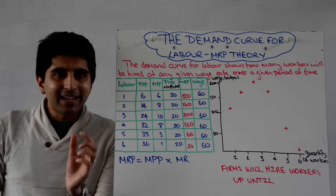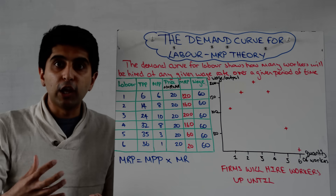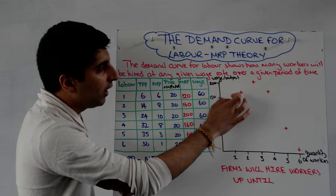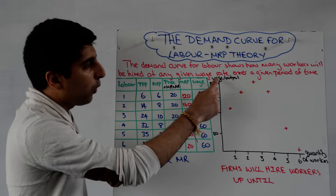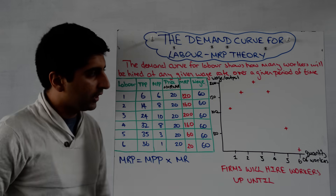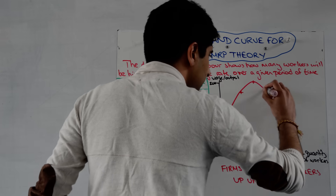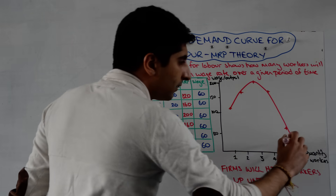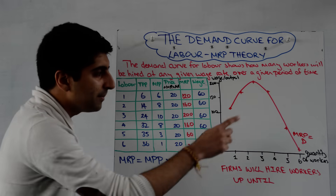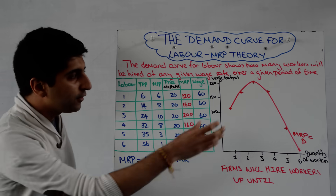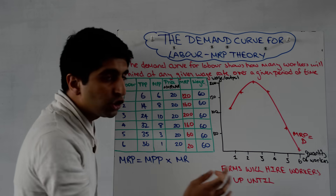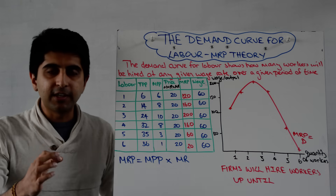Since firms base their demand decisions on MRP, if we plot an MRP curve we can learn a lot more about the demand for labour. On the right, we plot the marginal revenue product curve for an individual firm, with wage on the y-axis and quantity of workers on the x-axis. When we plot our MRP points, we get a curve — that is our MRP curve, the marginal revenue product curve for an individual firm — and crucially, that is the demand curve for labour. It fits our definition: at any given wage rate, it tells us how many workers a firm will employ.